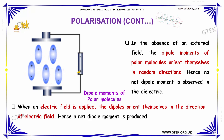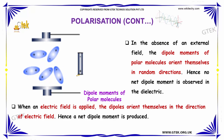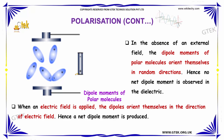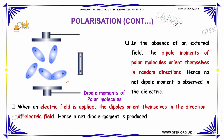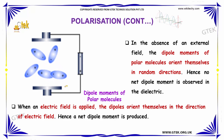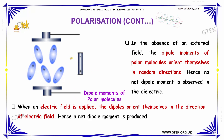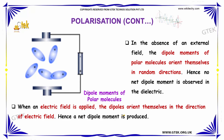In the absence of an external field, the dipole moments of polar molecules orient themselves in random directions, so no net dipole moment is observed in the dielectric. When an electric field is applied, the dipoles orient themselves in the direction of the electric field, and hence a net dipole moment is produced.